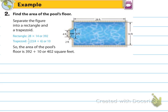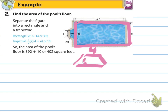Number 2: find the area of the pool's floor. Separate the figure into a rectangle and a trapezoid. The rectangle is 28 by 14. The trapezoid has a top base of 4, height of 2, and bottom base of 6. Using one-half times height times (base plus base): one-half times 2 times (4 plus 6) equals 10. The rectangle area is 392. Adding the two pieces together, the area of the pool's floor is 402 square feet.